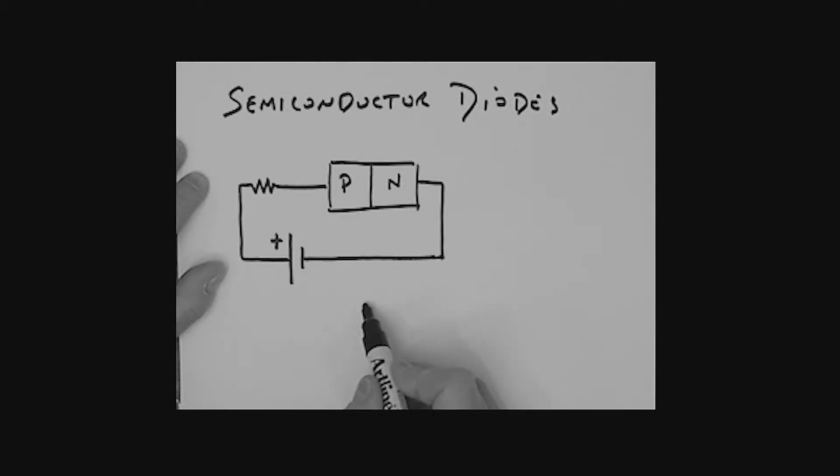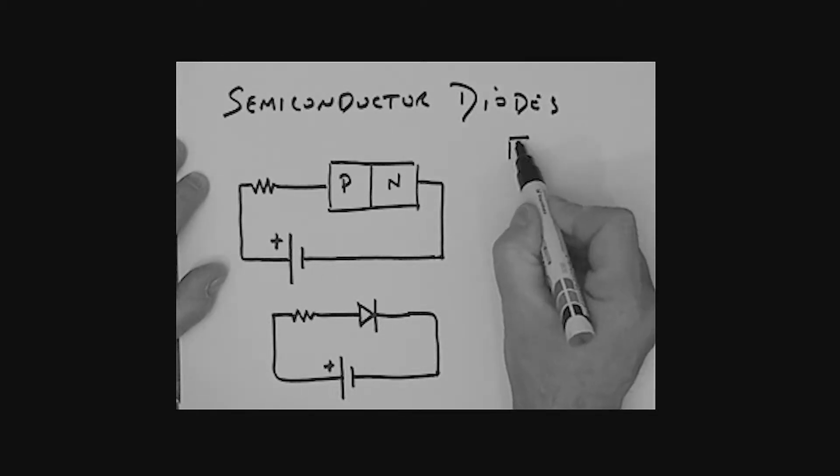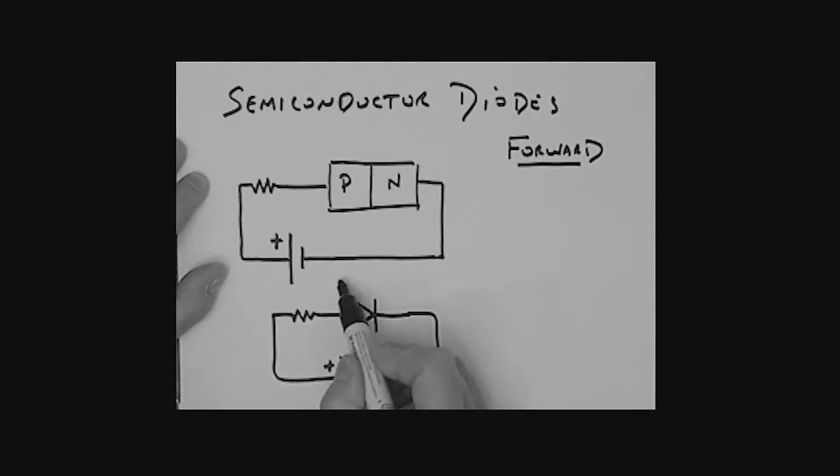This is a forward biased configuration for that diode. Let's draw the diode symbol version of this. Here's the symbol for the diode, here's my current limiting resistor, and here once again is that voltage source. Basically here the diode is going to be conducting.